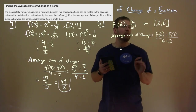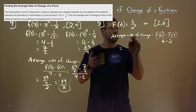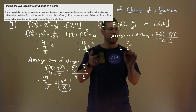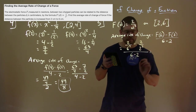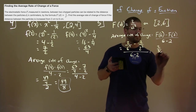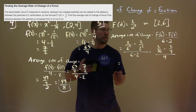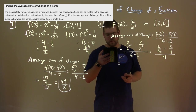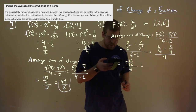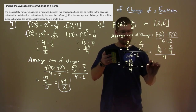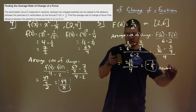The average rate of change equals f(6) minus f(2), over 6 minus 2. f(6) is 2/6², and f(2) is 2/2². So we have 2/36 minus 2/4, all over 4. That simplifies to: 2/36 minus 2/4 is negative 16/36. Dividing negative 16/36 by 4 gives us negative 1/9. Our average rate of change is negative 1/9 newtons per centimeter.